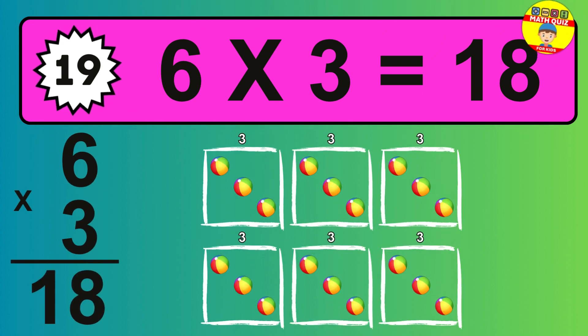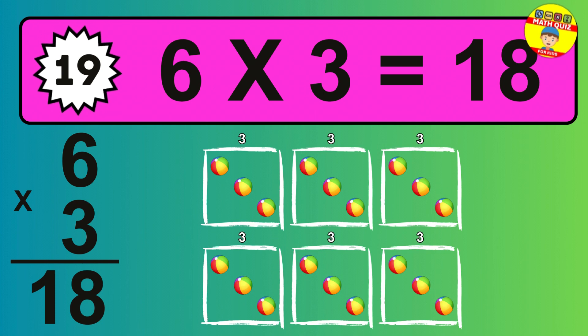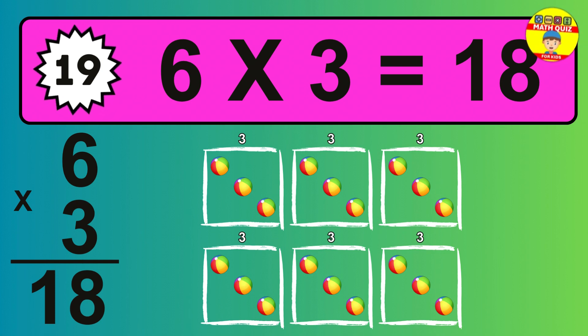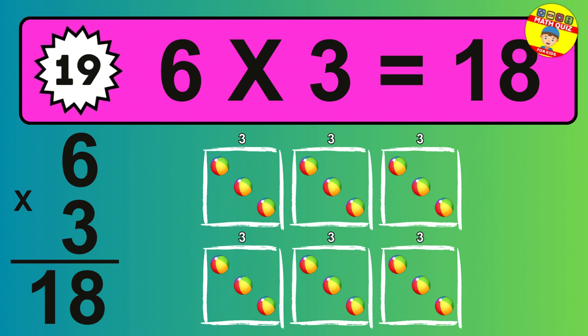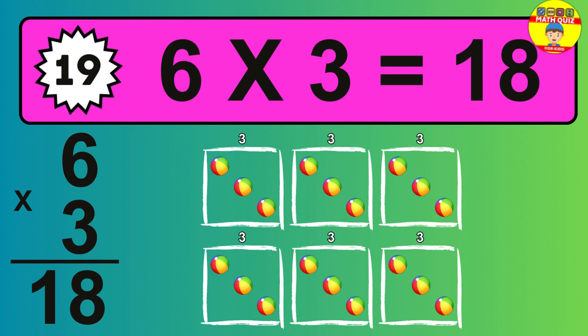Question 19. The answer is 6 times 3 is 18. To calculate, we have 6 groups with 3 balls each one. So how many balls do we have? 18 balls.